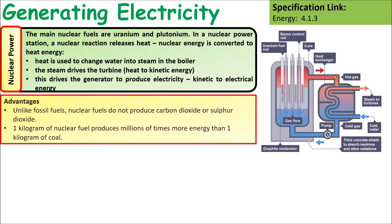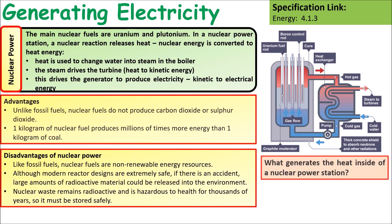The advantages of nuclear power are that it produces no carbon dioxide and no sulfur dioxide, and one kilogram of nuclear fuel produces a million times more energy than one kilogram of coal. Disadvantages include that it is not renewable, accidents could release large amounts of radioactive material into the environment, and nuclear waste remains radioactive for thousands of years. The heat inside a nuclear power station is generated by the radioactive decay of uranium fuel rods.